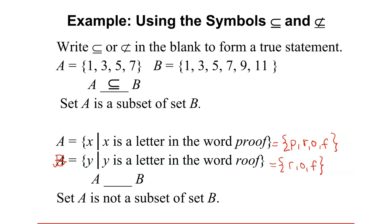Therefore, the notation we use is the one with a slanted line, indicating A is not a subset of B.